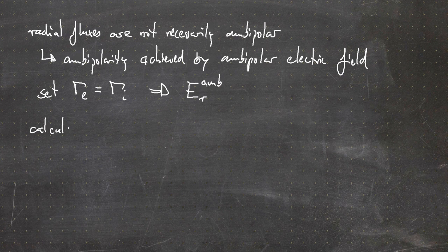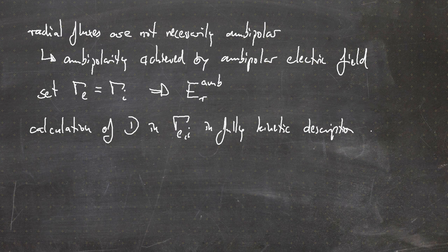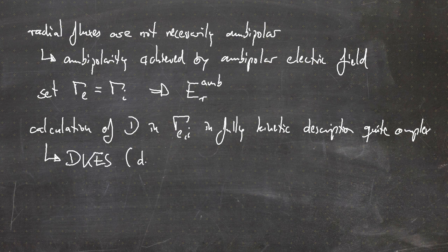The calculation of the diffusion coefficient in the expressions of the particle flux for electrons and ions in a fully kinetic description is quite complex. This is why there are numerical codes for that. A famous example is the DKES code, which stands for Drift Kinetic Equation Solver.